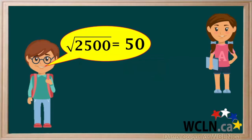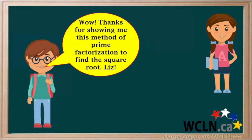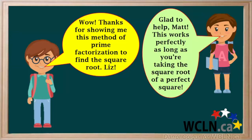And again using prime factorization, Matt knows that the square root of 2500 is 50. Matt is grateful to Liz for showing him this method of prime factorization. Liz answers that this method will help us find the square root of any perfect square.